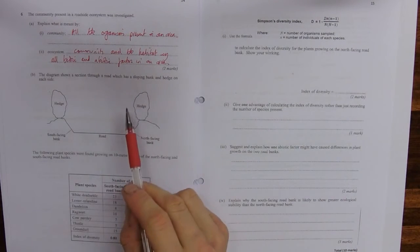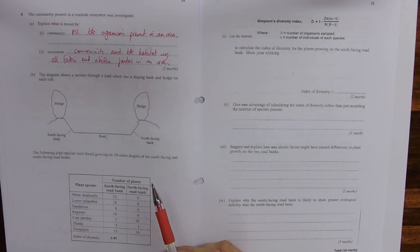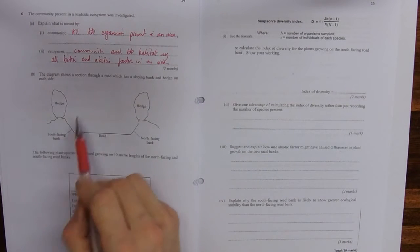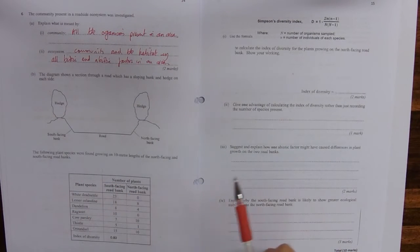Here's a section of road that's sloping a bank and a hedge on each side and some data for plants that they have found there. And we've calculated an index of diversity for the south facing and the north facing has got a blank. This looks ominous. Use the formula. Oh, here we go. And calculate an index of diversity.